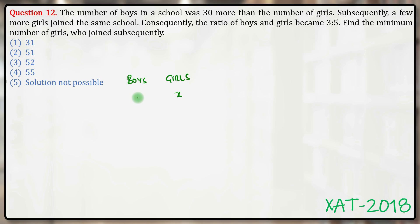let's say there were x girls earlier. Then we can say that the number of boys was x plus 30, because we know that the number of boys was 30 more than the number of girls.